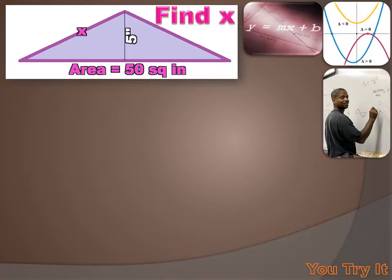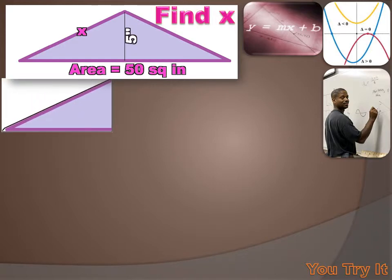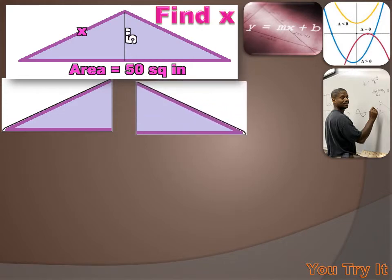I hope you figured this one out — it took a little bit of thinking, I bet. Because we don't have a right triangle here; we've got a non-right triangle. We know that the area of this triangle is 50 square inches and the height is 5 inches, and we're supposed to figure out the length of one of the sides. But it's not a right triangle — it's two right triangles. There's a right triangle on the left side and another right triangle on the right side. This larger triangle is two right triangles pushed together, so we can use the Pythagorean theorem.